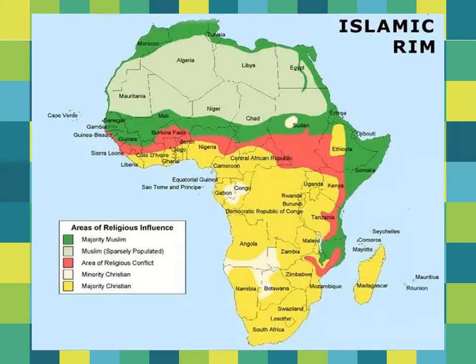On the map of Africa, you can see the green shaded region called the Islamic Rim — rim meaning border. This roughly circular or oval region, as well as the green shaded region in the Horn of Africa, represents areas with a majority Muslim population.